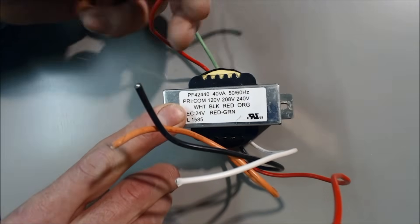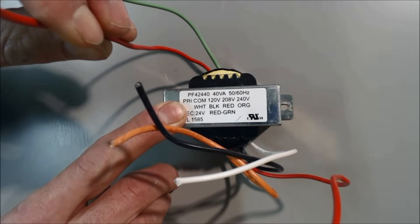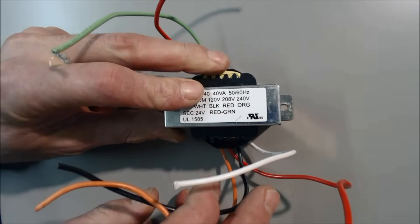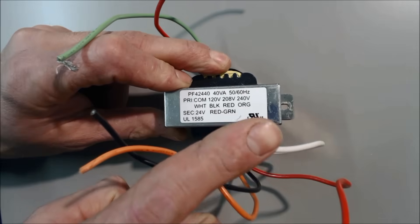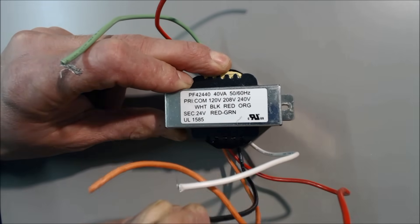This here is the secondary voltage. Green denotes common, red denotes hot. On this side, if you were to wire it into a 120 volt furnace, white would be the common and then black would be the hot 120 volt.